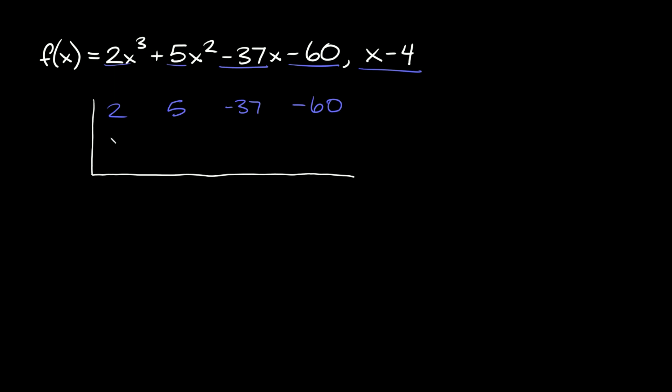And then the other thing that we have to find is our k value that we put out here, which comes from your binomial. So again, to find that, all you need to do is set this equal to 0. So x - 4 = 0. So again, x = 4. So that means k is equal to 4. k is the exact same solution as your x. So we're going to put a 4 out here.